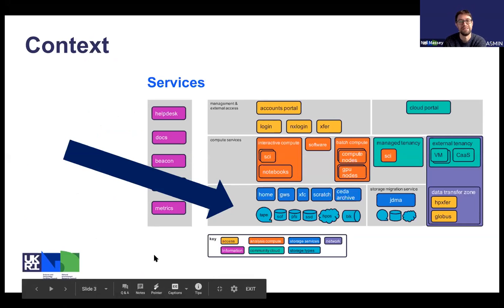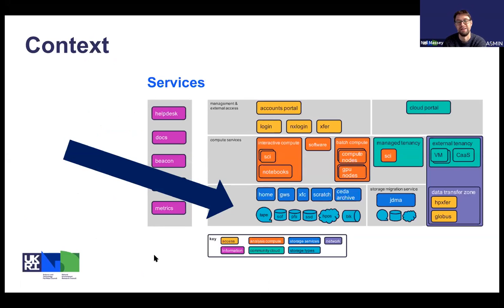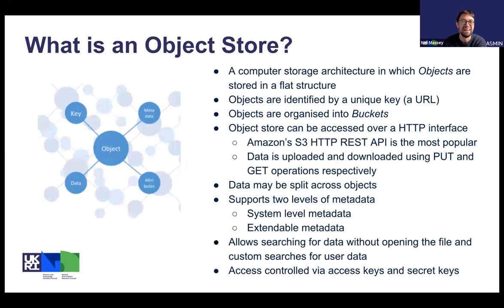For context, this is the slide we've all been showing, and this object store is obviously a storage service. So what is object storage? It's a computer storage architecture in which objects are stored in a flat structure — there's a very flat hierarchy to it. The objects are identified by a key, which is usually a URL. Objects are organized into buckets, but that's the only kind of hierarchy and organization there is.